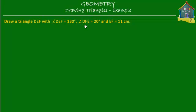Welcome to homecampus.com.sg. Here's another lesson on drawing triangles. The question is, draw a triangle DEF with angle DEF equal to 130 degrees, angle DFE which is 20 degrees, and EF which is equal to 11 centimeters.